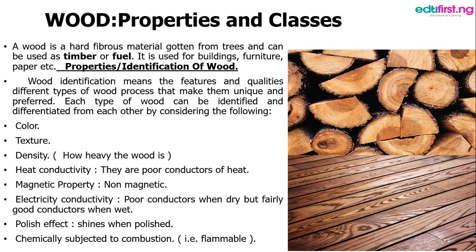What differentiates wood from other materials? What makes it unique? The first is the color — wood has a different color from most other materials. It has a beautiful texture, especially when it is already planed. Depending on the size, wood can tend to be very heavy. It's a very poor conductor of heat. It doesn't get attracted to magnets. Wood is a poor conductor when dry, but when wet, it is a fairly good conductor. Polished wood looks very beautiful. Wood burns easily — it is combustible and very flammable.